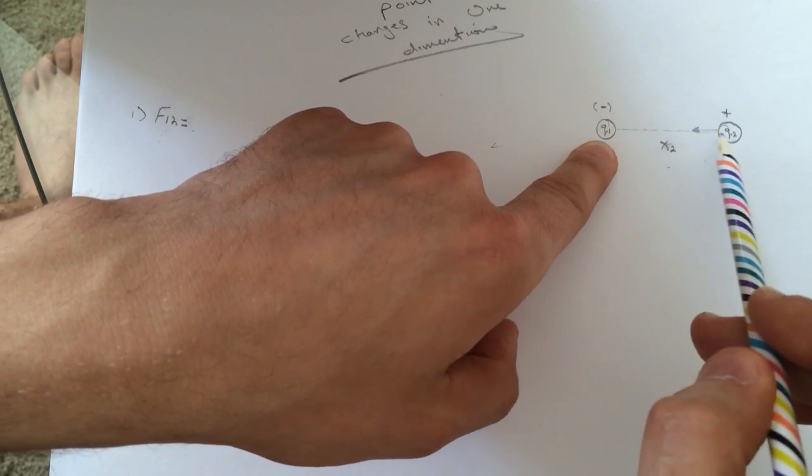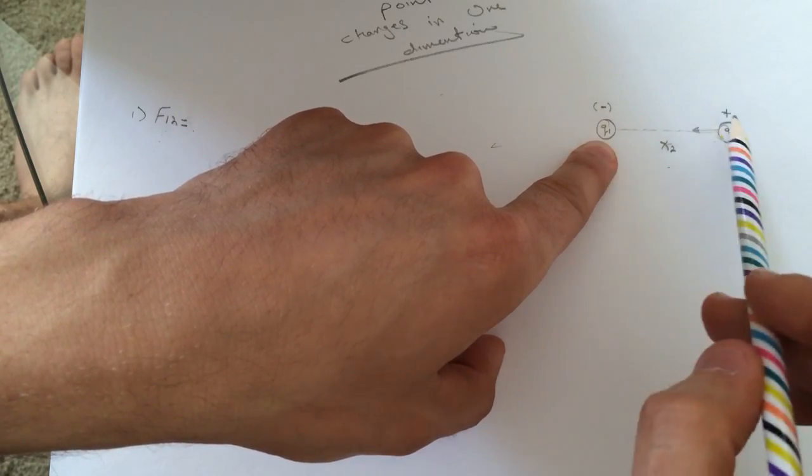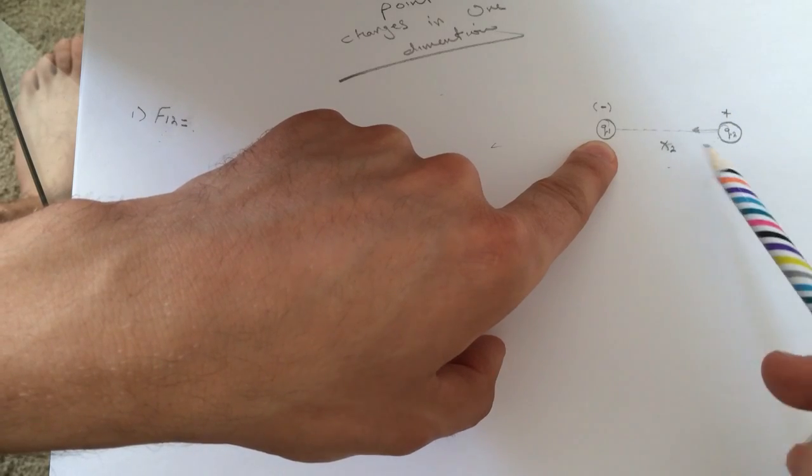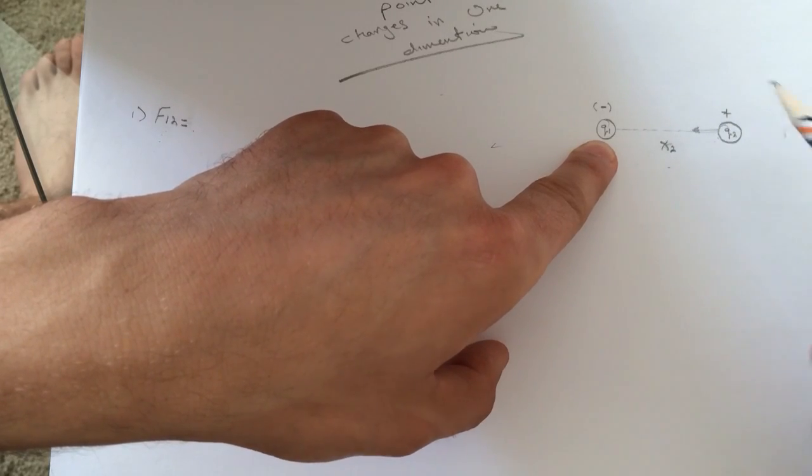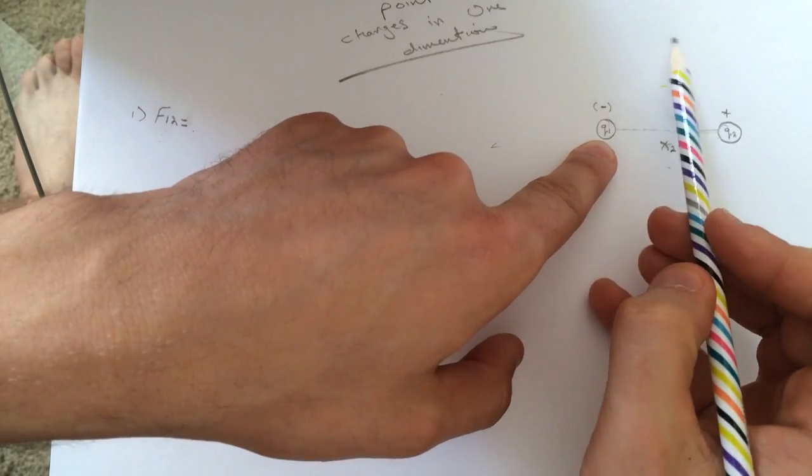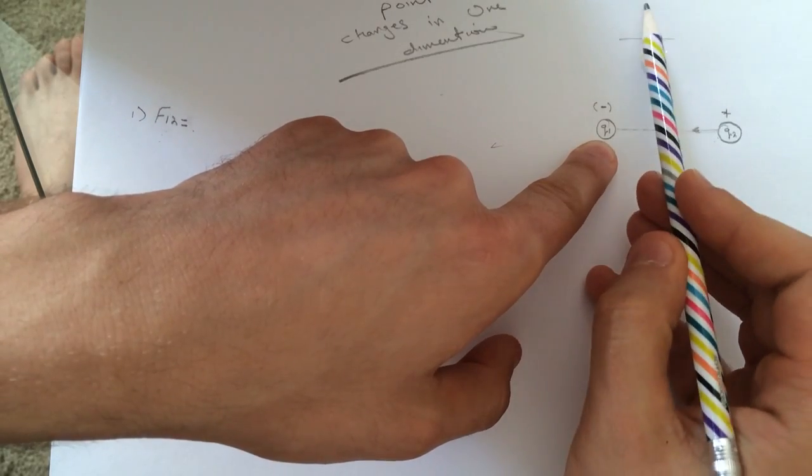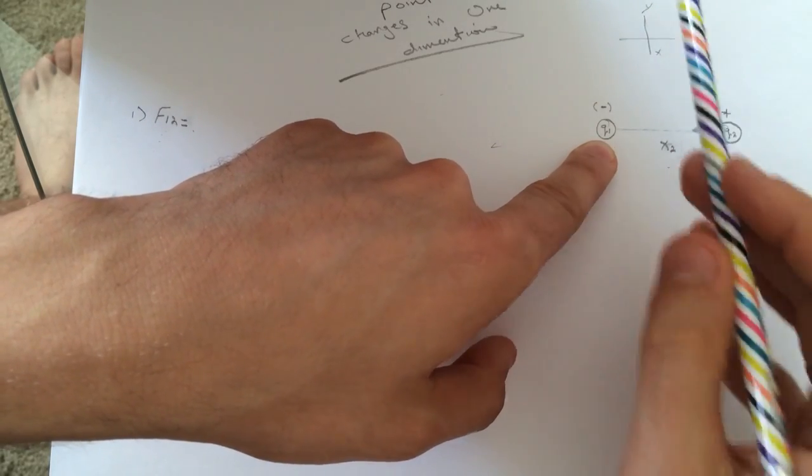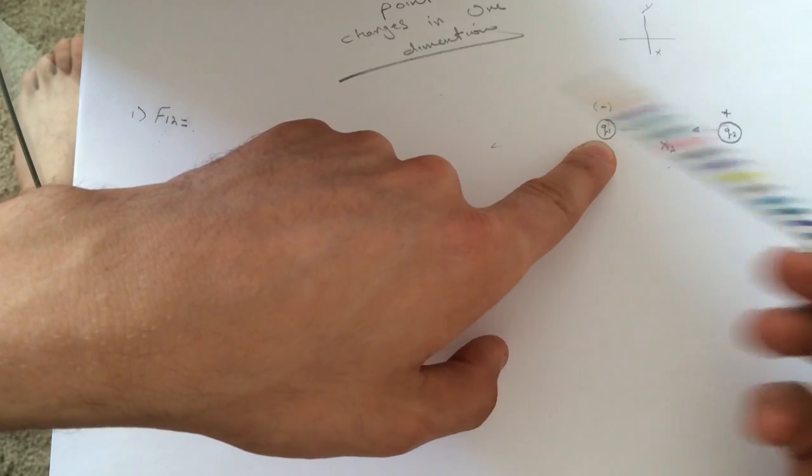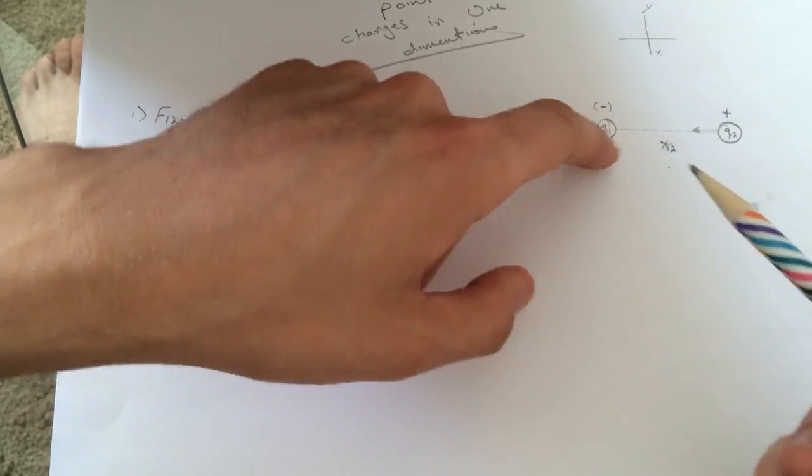So if this is standing still, this spot negative and this is positive, then it's going to be an attraction force. So it's going to go in this direction and we're saying that this is the y, this is the x coordinates. So it's going in the negative x.